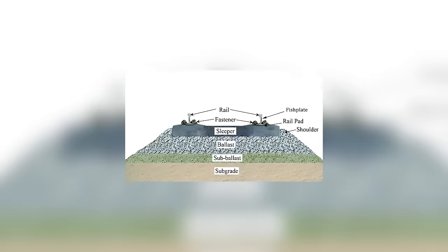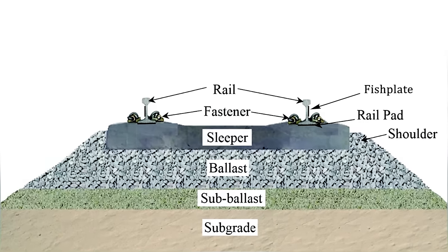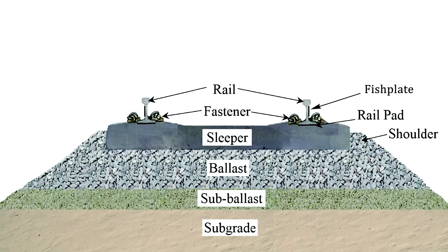The railway track is a multi-layered construction which typically includes rails, fish plates — also called joint bars or splice bars — a rail fastening system, slippers also called ties, ballast, and optionally a so-called sub-ballast. We will now try to briefly explain every one of those elements.